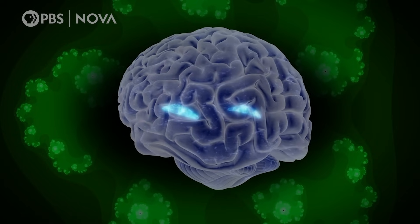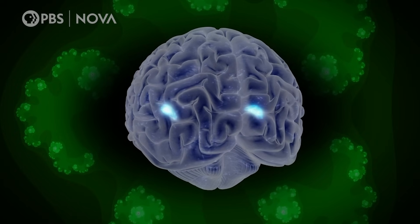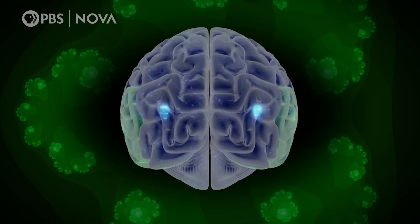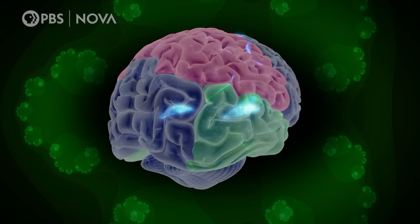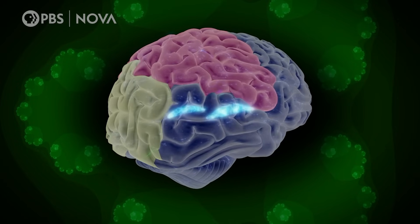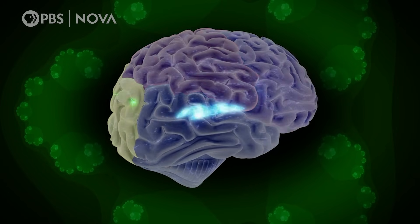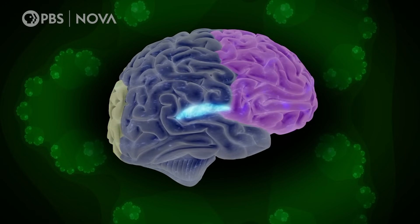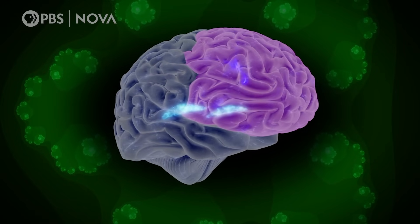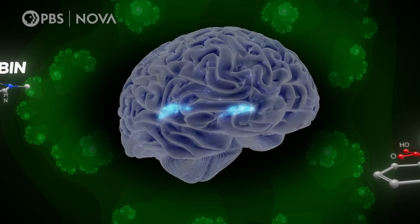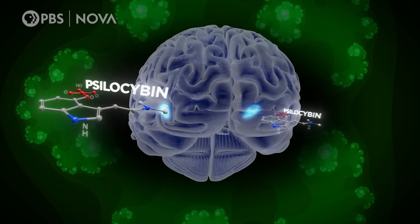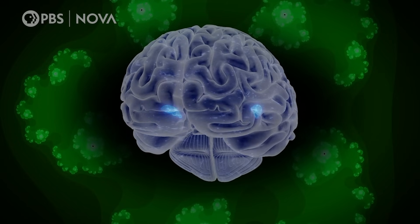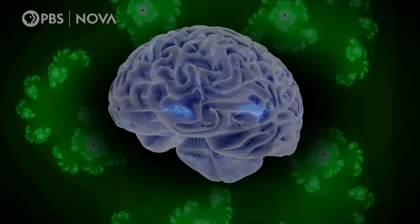Fred believes the claustrum's central location and shape suggest it regulates communication between the departments. When it's functioning normally, the claustrum is essentially acting like a switchboard — it's trying to help other brain regions figure out when to turn on and when to turn off. But when we experience a psychedelic drug, we believe that it's binding to specific receptors in the claustrum and somehow disrupting or disorganizing it. It's almost as if the switchboard walks away.